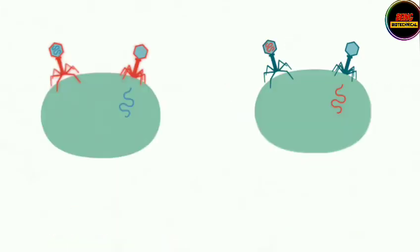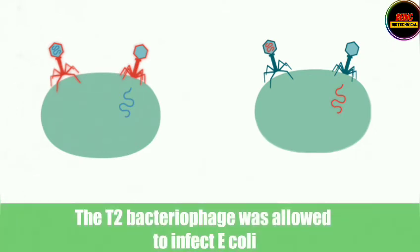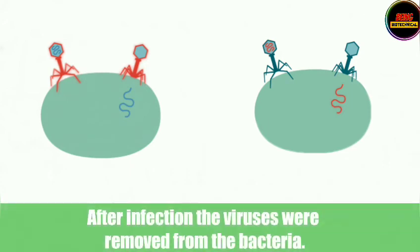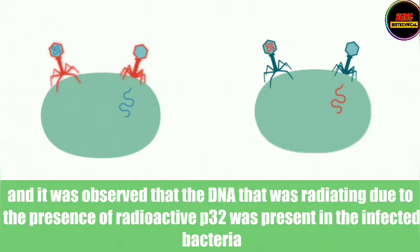They then allowed these viruses to infect bacteria separately. The bacteria that the viruses were allowed to infect was E. coli. After infection, the viruses were removed from the bacteria, and the bacteria were tested for radioactivity. It was observed that the DNA from the virus having radioactive phosphorus was present in the bacteria that had been infected, while protein was not found in any of the bacteria.